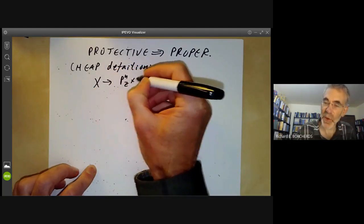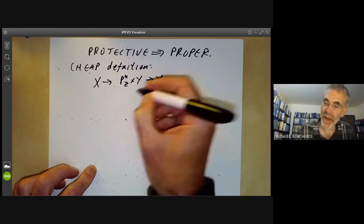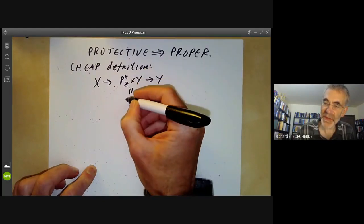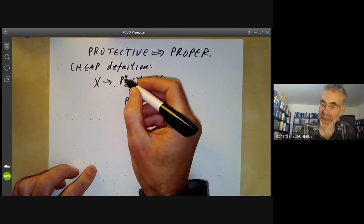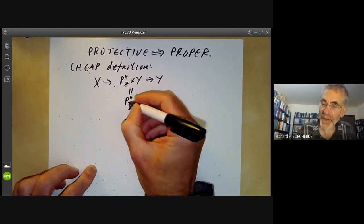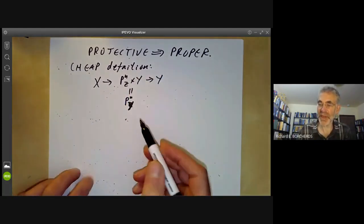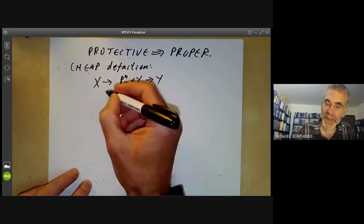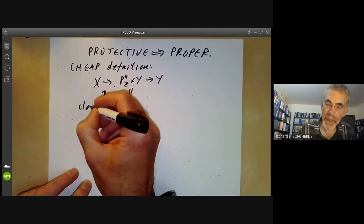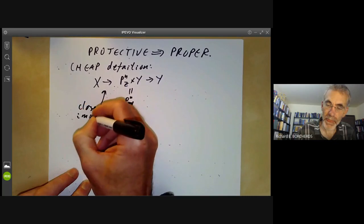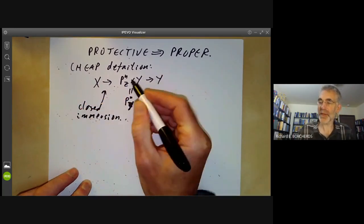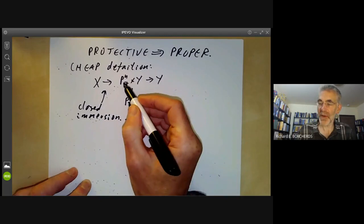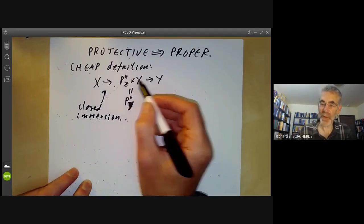A projective morphism from X to Y is one which factors from X to P^N over Z times Y to Y. So this we can think of as being projective space over Y, and this is projective. So that should be a Y. And this is projective space over the integers, where this is a closed immersion. And this is a sort of projection from projective space times Y to Y.